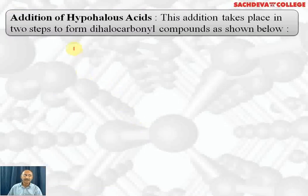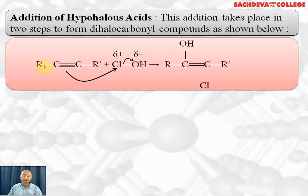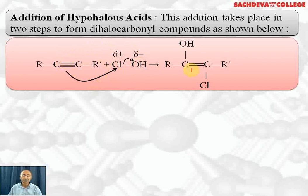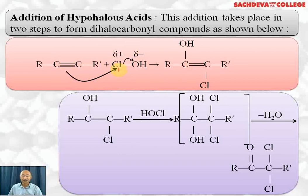Next, we consider the addition of hypohalous acid. This addition takes place in two steps to form a dihalo carbonyl compound. Starting with a symmetrical alkyne and hypochlorous acid: HOCl undergoes heterolytic fission, giving OH⁻ and Cl⁺, because oxygen is more electronegative than chlorine. Cl⁺ attacks one carbon and OH⁻ attacks the other, changing the triple bond to a double bond. This is the first step of the addition reaction, where the electrophile (Cl⁺) attacks first.